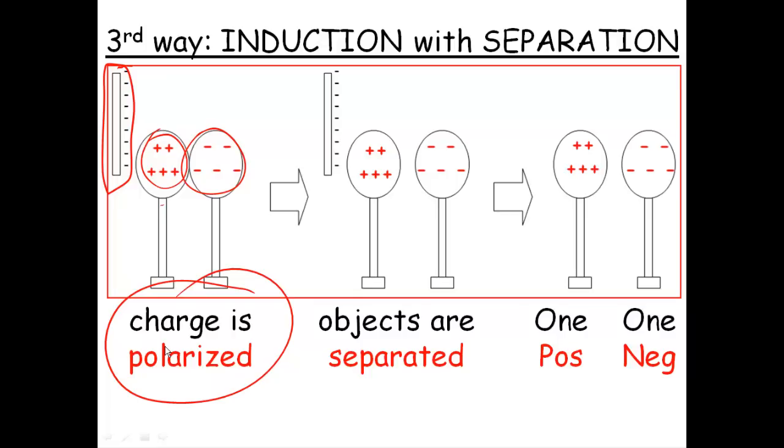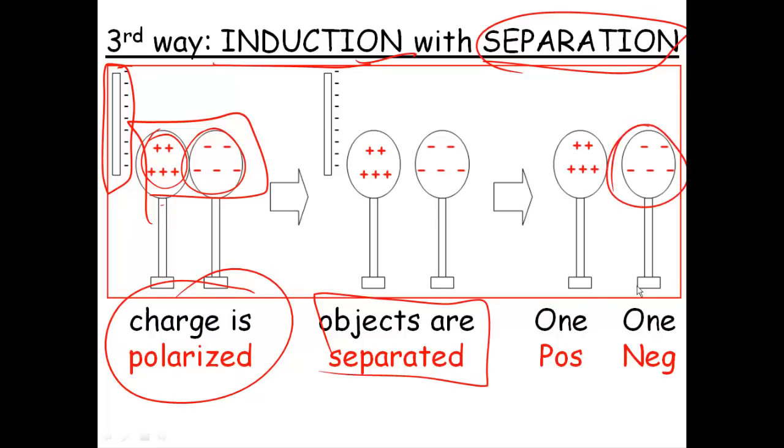That isn't charging. Remember, we didn't change the net charge yet. This thing acts as one object. Then we separate, hence the induction. We're inducing a charge and then separating. So now those electrons can't get back over. And we can take the rod away and those electrons are stuck there. So one side is negative because they were forced to run away and couldn't come back, and the other side is positive.